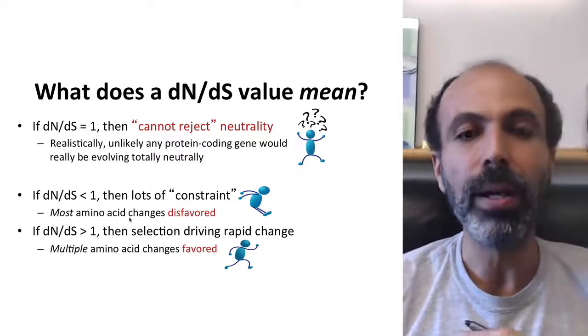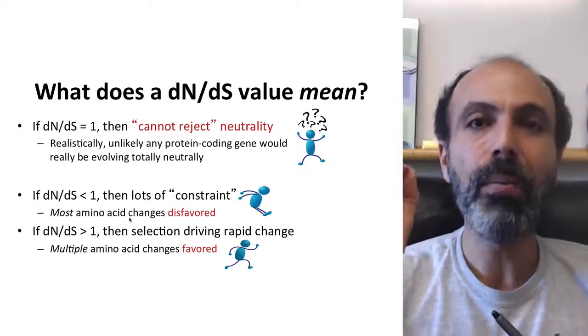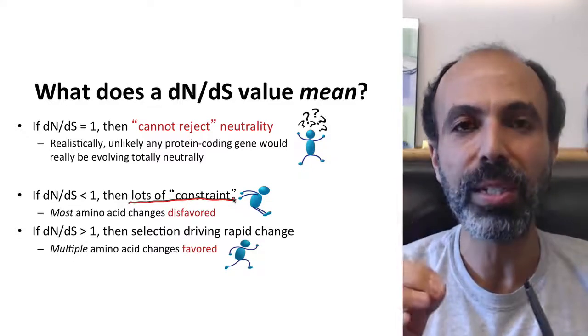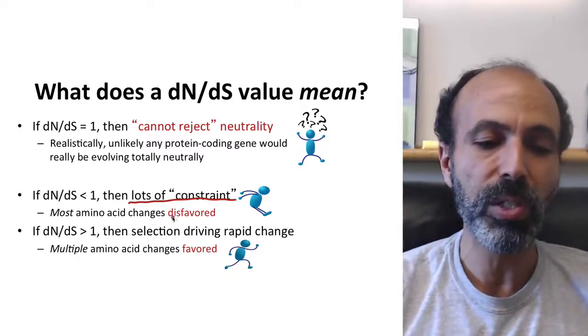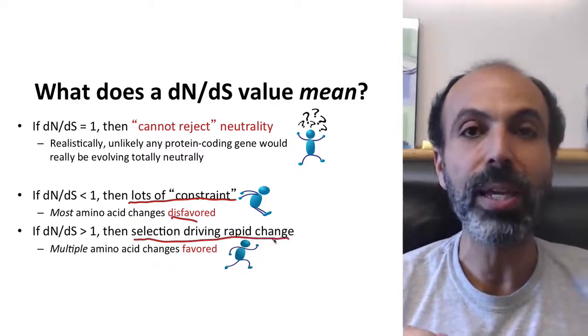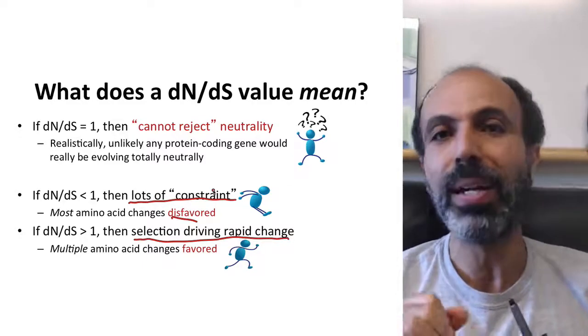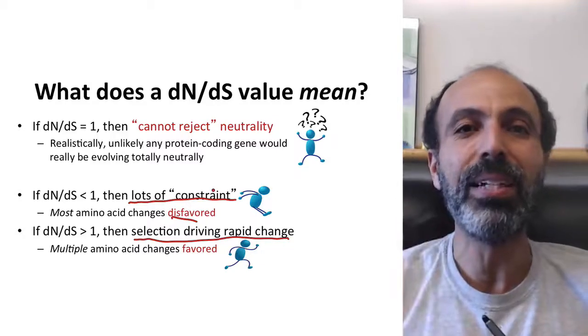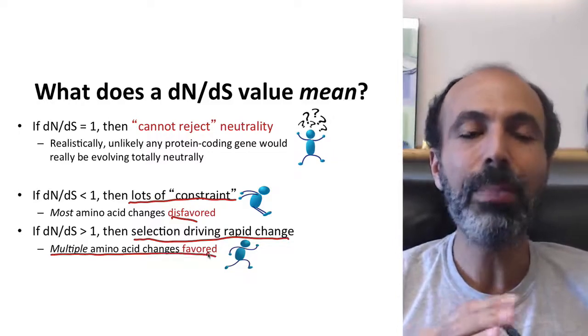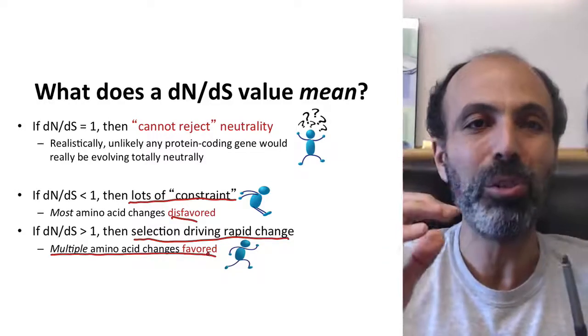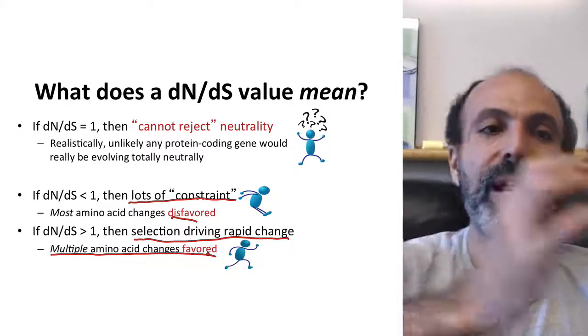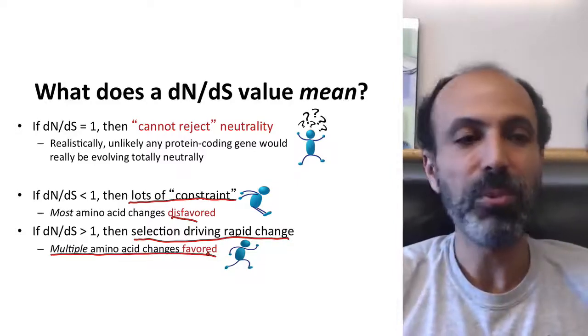So, if you have dN/dS less than one, you may still have some adaptive changes in there, but you have, importantly, lots of constraint. Most changes that come up there are bad, and they're taken out. Most of the changes are disfavored. Similarly, if you have dN/dS greater than one, then you definitely have selection driving rapid change. You probably have some constraint as well. Probably not any possible change is good, but probably a subset of them are bad. But you have nonetheless had multiple amino acid changes favored. So, what's happening here is you're basically looking at an average of an evolutionary process when you're looking at the single dN/dS value. So, you can tell that there's been a lot of constraint or a lot of rapid evolution, or you just can't tell. That's really what it comes down to.